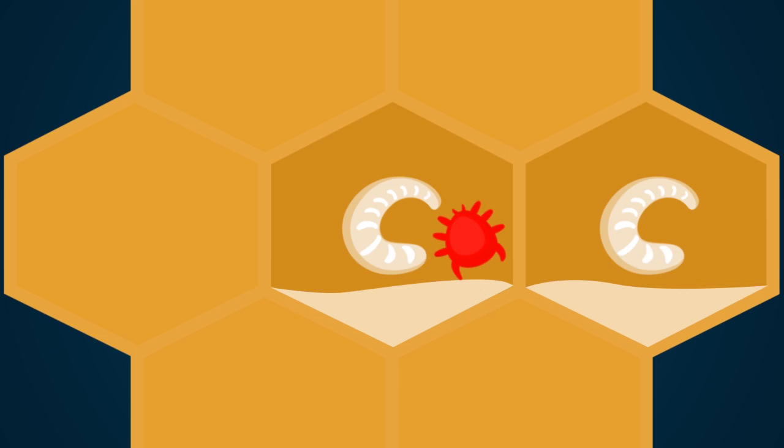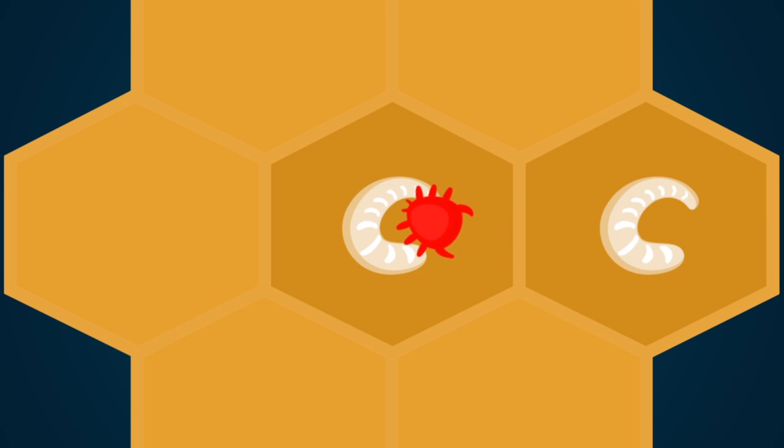The larvae feeds on the brood food, slowly releasing the mite, which will then start feeding on the larvae itself. As the Varroa feeds on the larvae, it transmits infectious viruses that can be fatal.